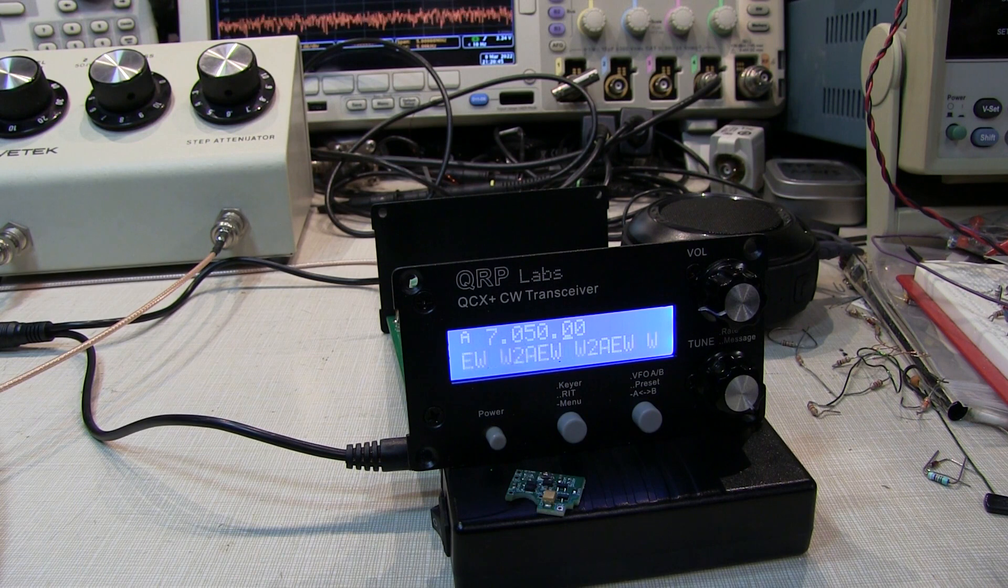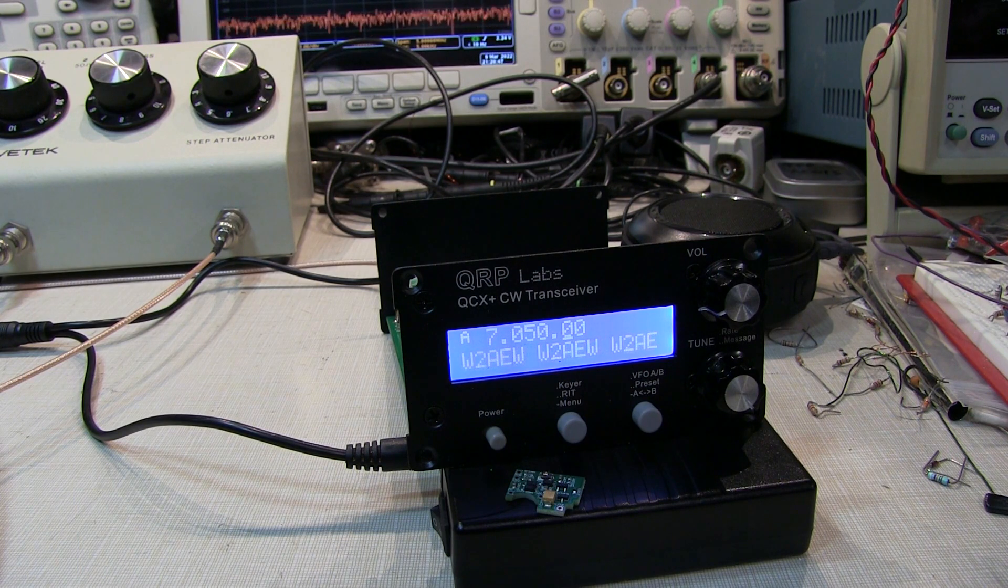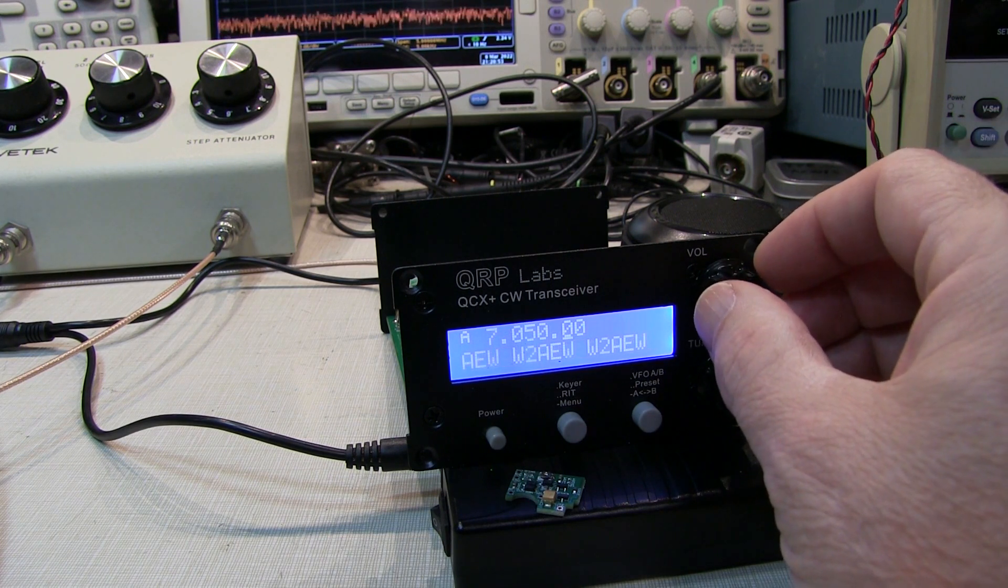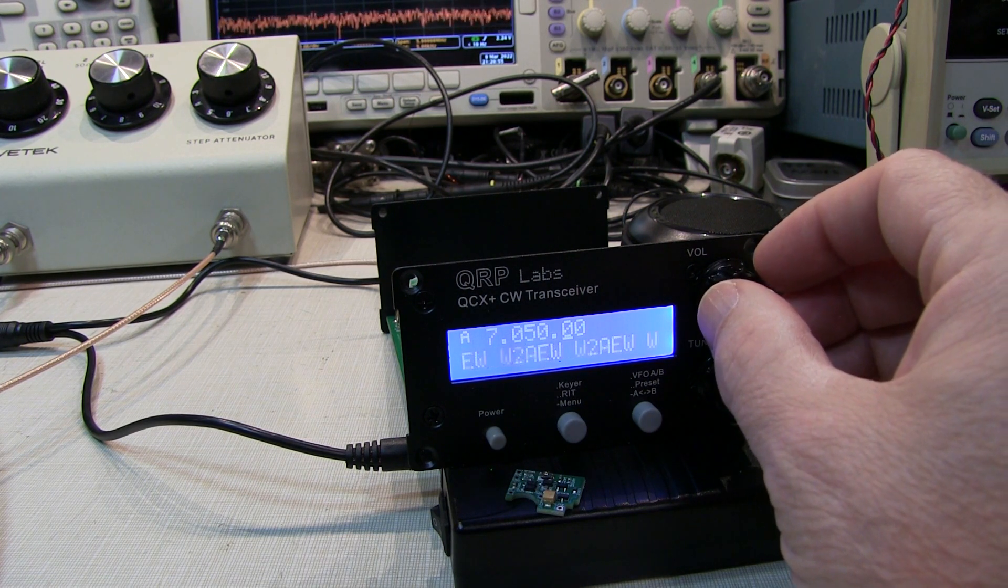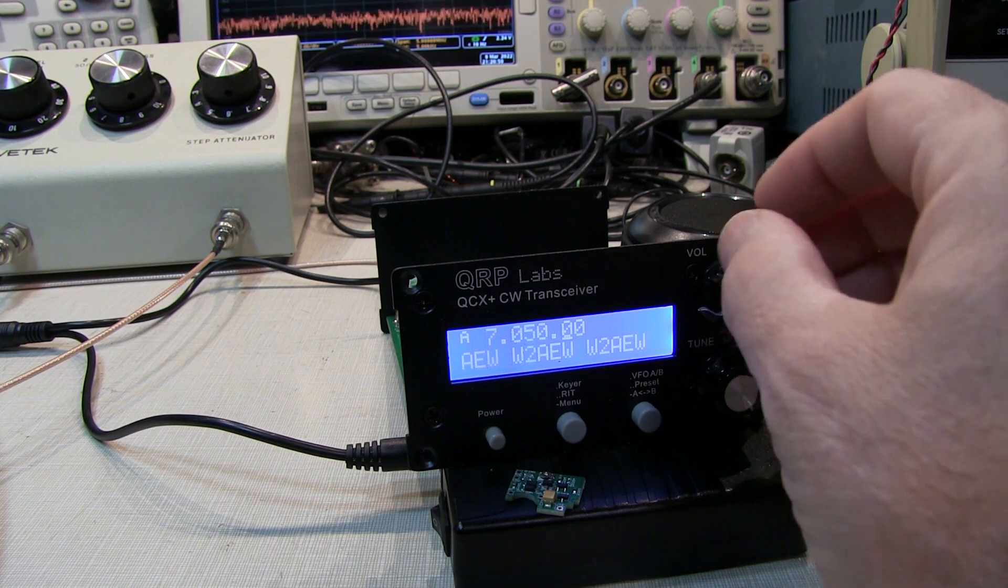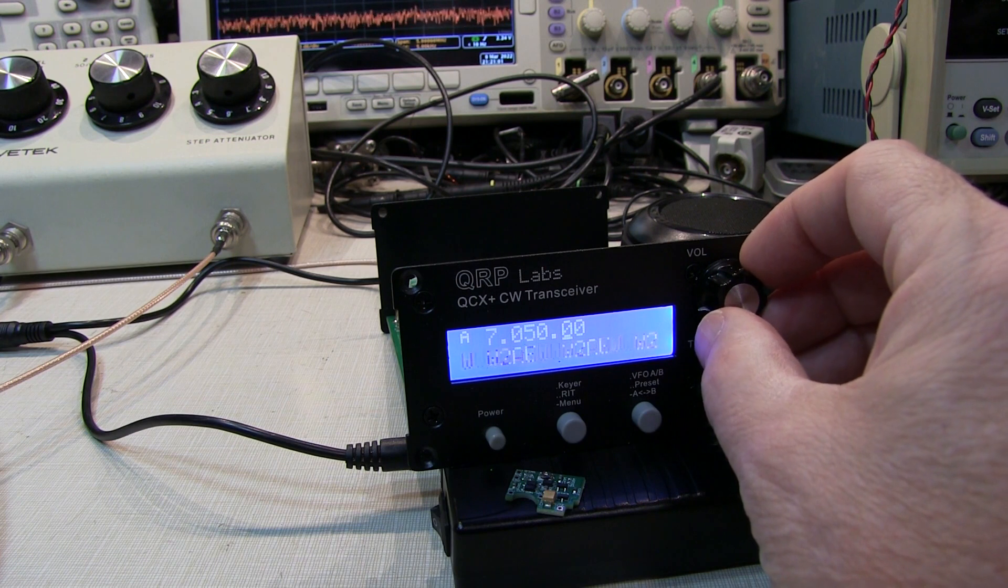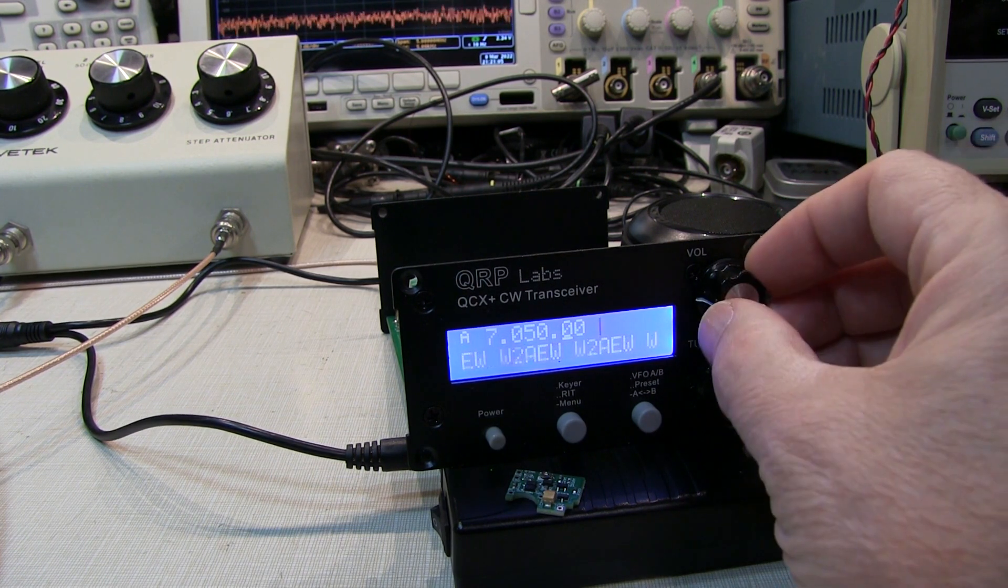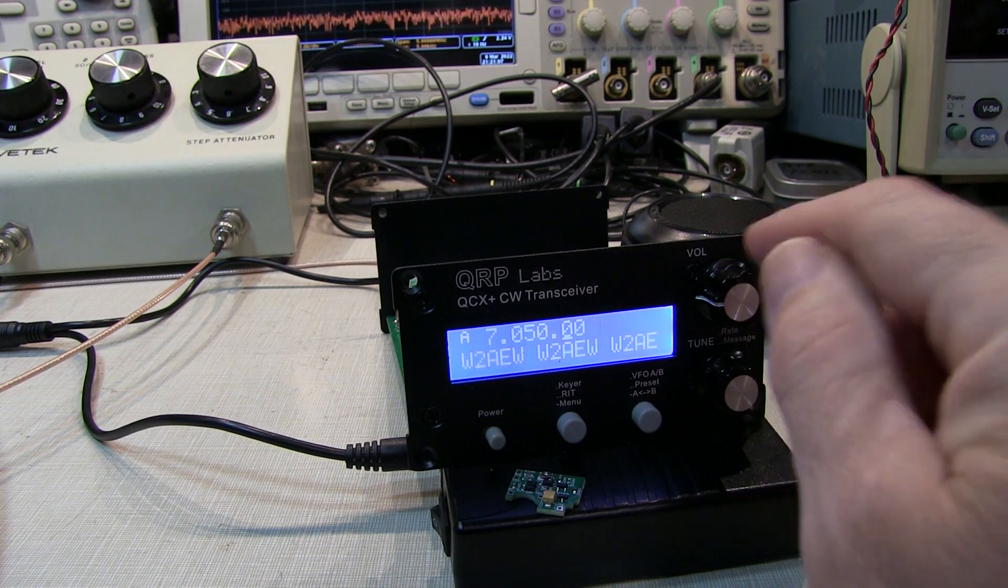To get an idea of why this receiver needs some AGC, let's take a look at receiving some signals at different levels. So here's a signal that's about 30 dB below S9. So it's about a 1.5 microvolt, 1.6 microvolt signal. That's probably about the minimum I'd probably be able to work because otherwise they wouldn't be able to hear me. So we can hear that being received pretty well. That's pretty low level. But I'm going to leave the volume here.